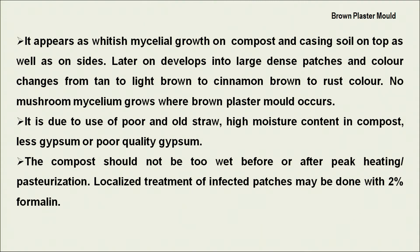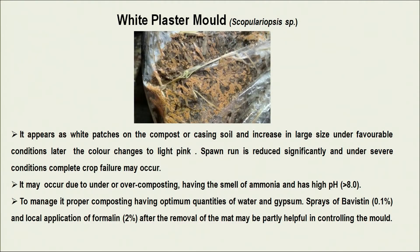We can manage brown plaster mold by properly pasteurizing the compost. White plaster mold is also a competitor mold; it appears as white patches on the compost and casing soil, increases in size, and its color changes to pink later on. It reduces spawn run significantly, and under severe conditions with very high incidence, even crop failure may occur.